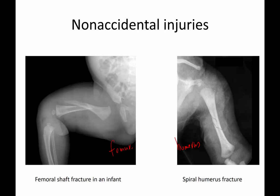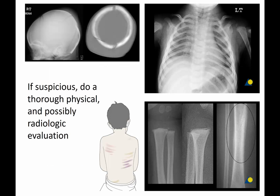You have to be very concerned about child abuse, and that needs to be reported by you and investigated by the appropriate authorities wherever you're practicing. A spiral humerus fracture is another example in a toddler — an unusual fracture that can occur from torsional forces from child abuse. If you are suspicious, you have to do a thorough physical and possibly radiologic examination.